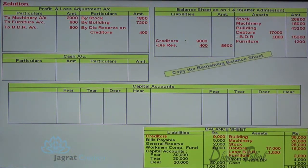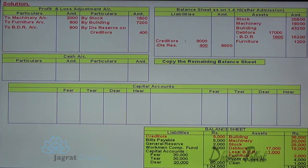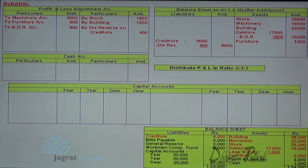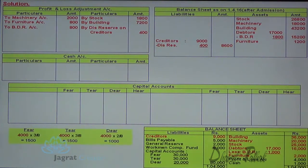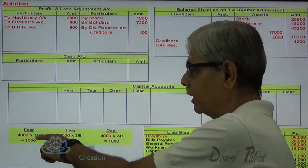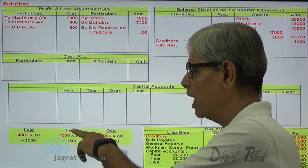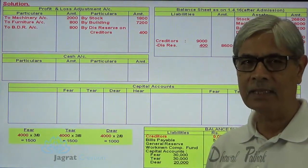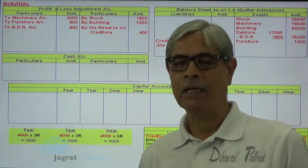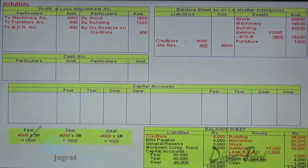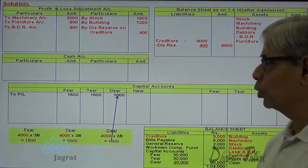Next, copy the remaining details from the balance sheet. Profit and loss account has a debit balance of ₹4,000, distributed in the profit sharing ratio of 3:3:2. So ₹4,000 × 3/8 = ₹1,500 share of Fear, ₹4,000 × 3/8 = ₹1,500 share of Tear, and ₹4,000 × 2/8 = ₹1,000 share of Year in loss, debited to the capital accounts of the partners. Journal entry: Fear, Tear, and Year capital account debit to profit and loss account credit.